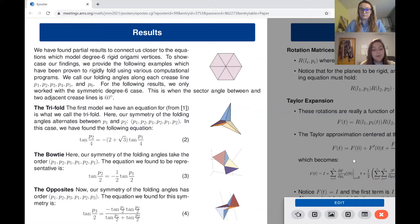The bow tie has folding angle symmetry p1, p1, p1, p2, p1, p2, and the resulting parameterized equation captured in equation three shows an algebraic relationship between the folding angles p1 and p2.